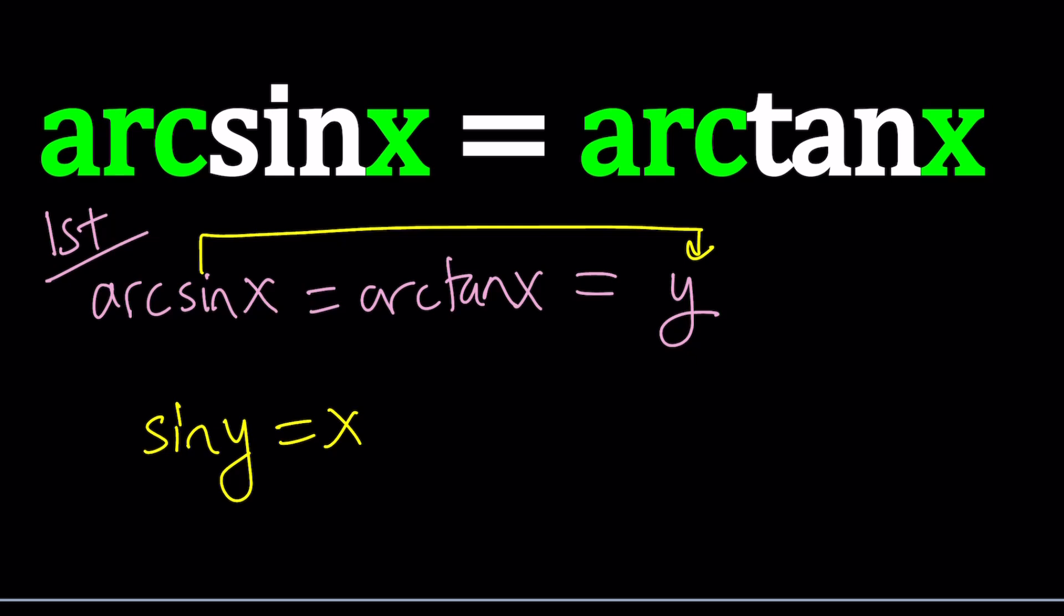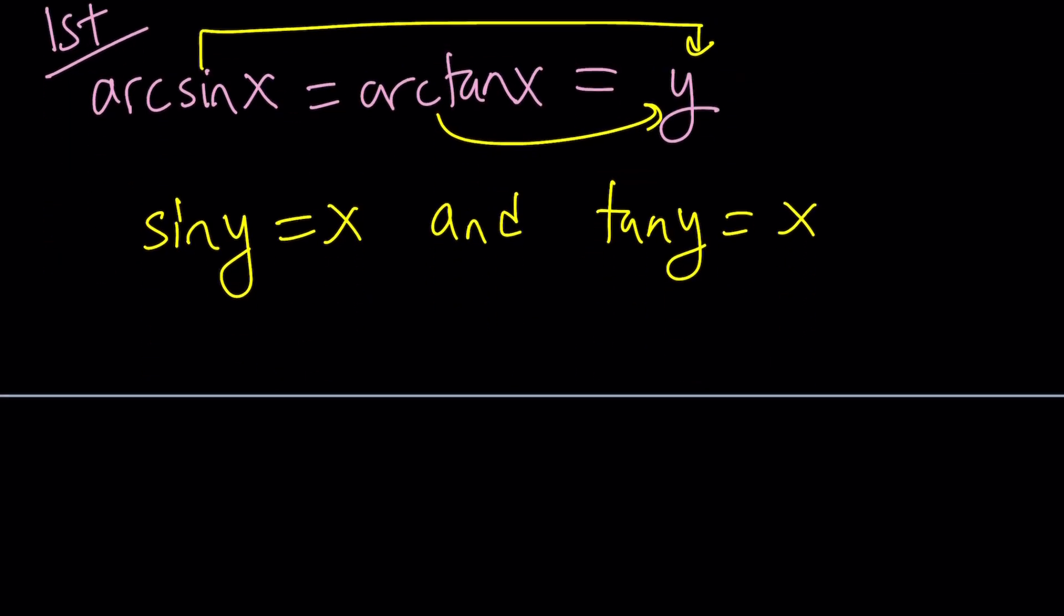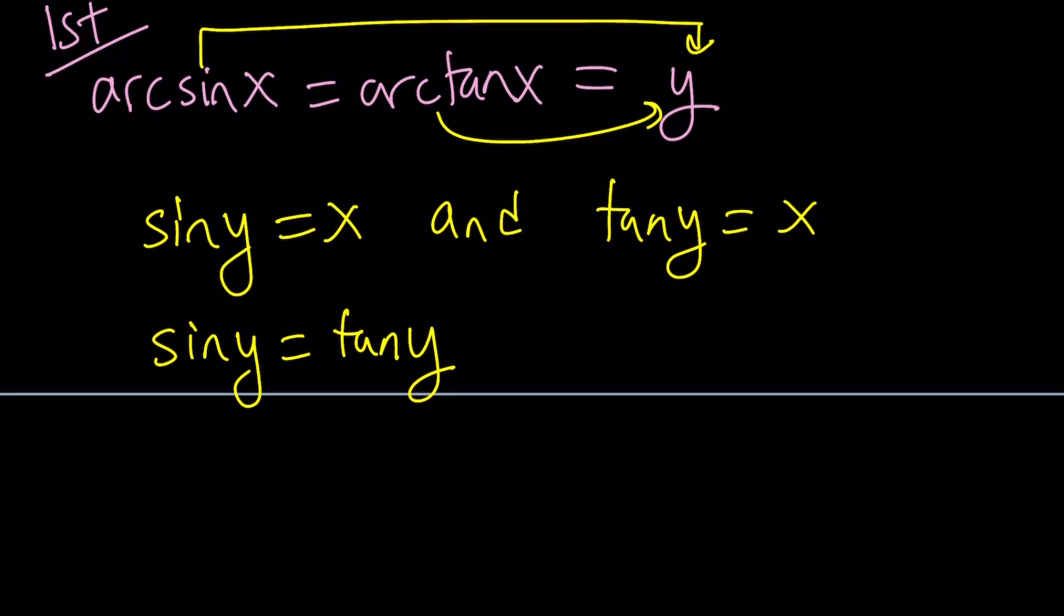Of course, this also means that tan y is equal to x from the second equation. And now we have an interesting scenario where sin y and tan y are equal to the same thing, which means they're equal. If two things are equal to the same thing, then they're equal. So sin y equals tan y, but tan y can be written as sin y over cos y.